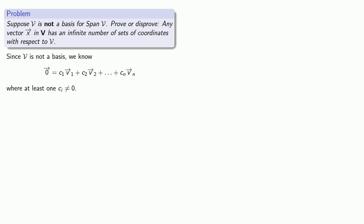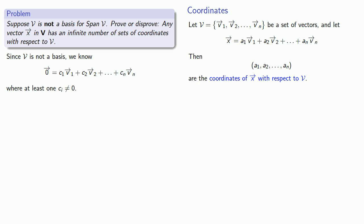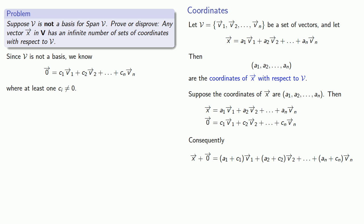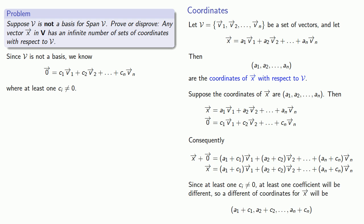The coordinates of that vector will be the coefficients of the linear combination that give us that vector. I also know the coordinates of the zero vector — the coefficients of a linear combination that gives me the zero vector. If I add the two together, x plus the zero vector is found by some linear combination. Since x plus the zero vector is just x, I have a linear combination equal to x with different coefficients, giving a different set of coordinates for x. So now I have two sets of coordinates for x.